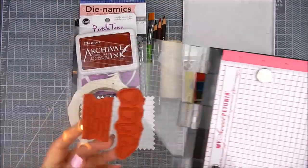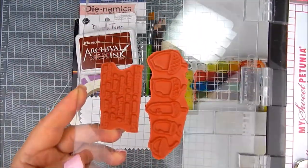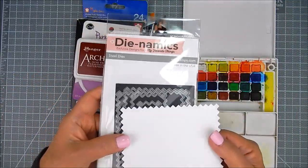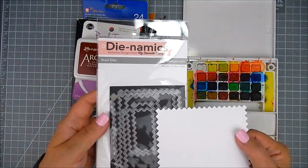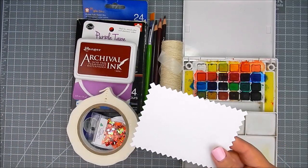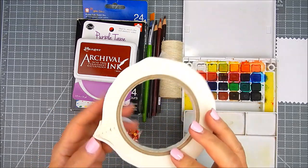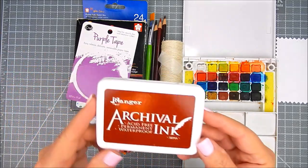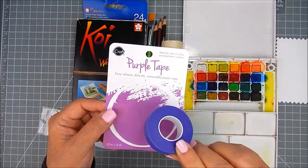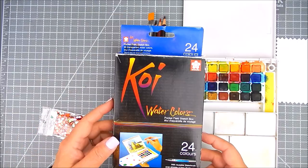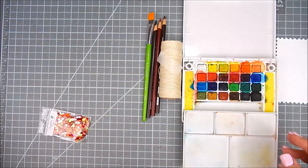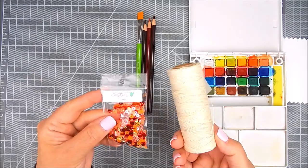I'm stamping on a retired My Favorite Things die and foam tape. I have Archival ink in sepia color, I have Sakura Koi watercolors.